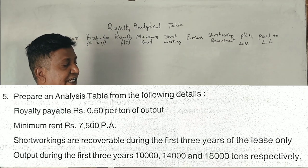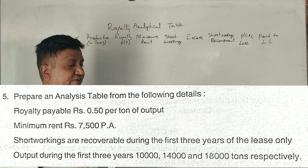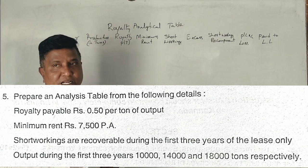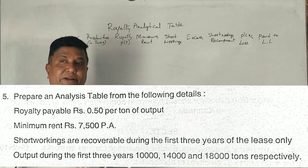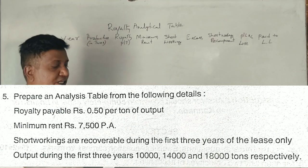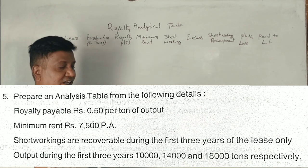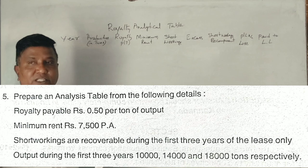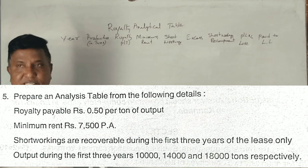Question 5: Prepare an analysis table from the following details - royalty payable ₹0.50 per ton of output, minimum rent ₹7,500 per annum, short workings are recoverable during the first three years of the lease only. Output during the first three years: 10,000, 14,000, and 18,000 tons respectively.